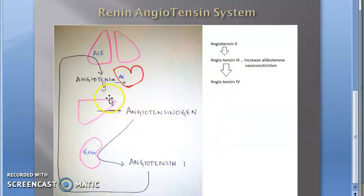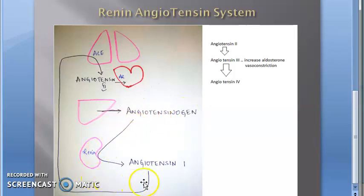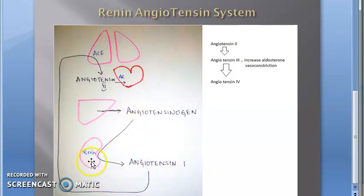It all starts with the liver. The liver makes angiotensinogen — it is a pro-form. Then renin converts angiotensinogen into angiotensin 1.